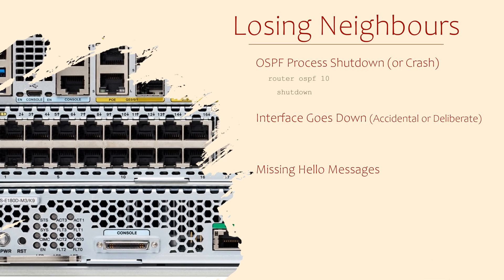Usually when the OSPF process shuts down, it's deliberate — we want to shut it down for some reason. We can do this with the shutdown command under OSPF configuration. We may need to do this when we want to perform maintenance on the router and don't want it advertising routes for a while. Although rare, it's also possible that the OSPF process could crash — if this happens, you should really log a ticket with Cisco to find out what went wrong. And of course, rebooting the router will also cause the OSPF process to stop.